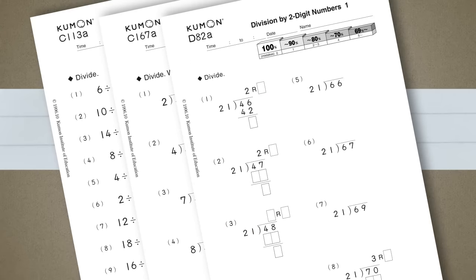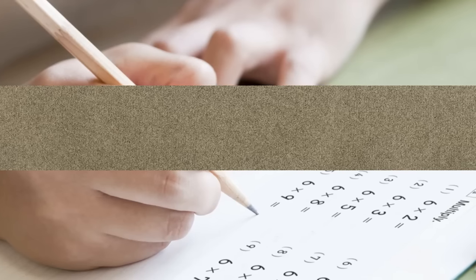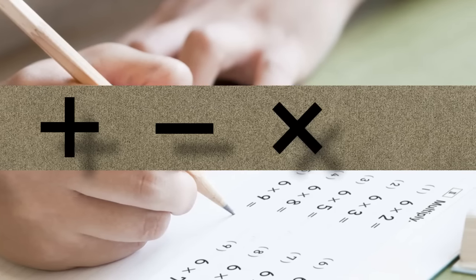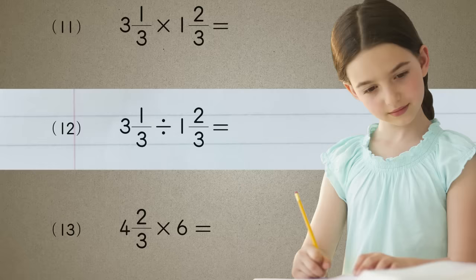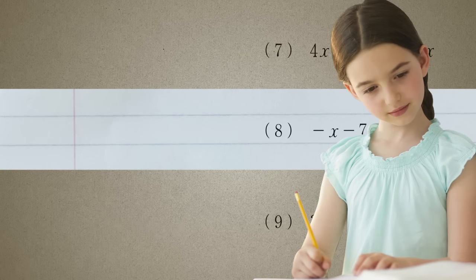Emily then tackled division. After gaining a strong understanding of the four basic operations—addition, subtraction, multiplication, and division—Emily studied fractions. She soon progressed to algebra.